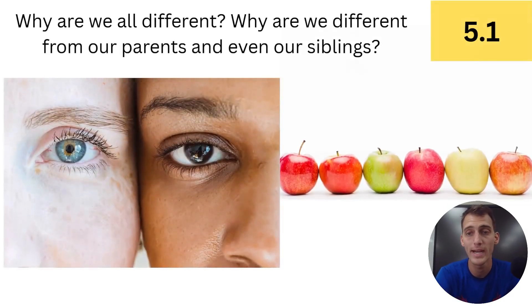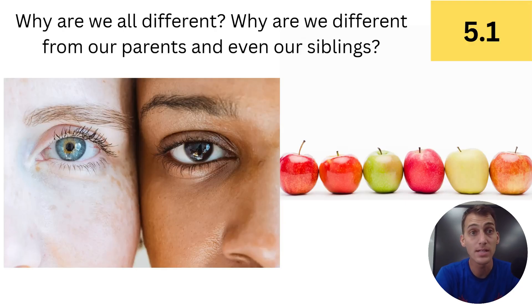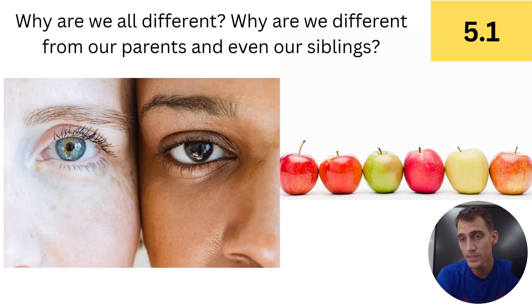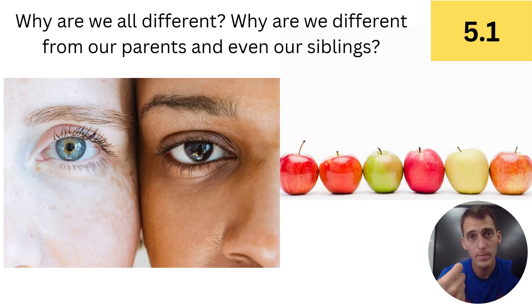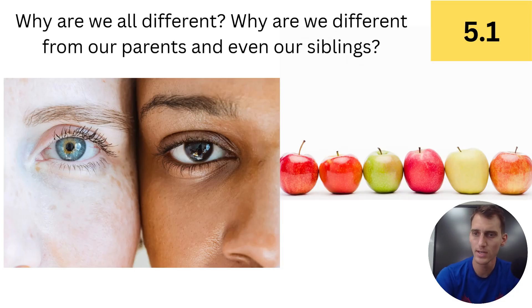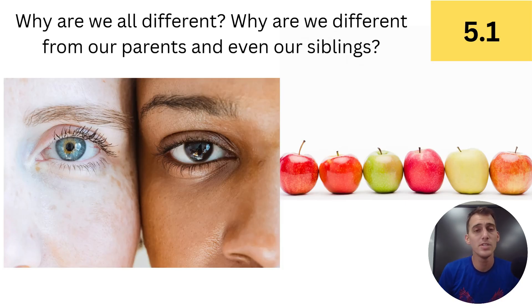This is the start of our genetics unit — unit 5 on heredity. Biology offers the answer to questions like: Why are we all different from each other? Why are we different from our parents and even our siblings? Where do genetic differences come from? The answer is from your genetics — the DNA that you inherited from your parents. We're not all the same because we get different combinations of DNA, and in every generation the DNA gets shuffled up so everybody gets a new combination of genes never before seen.